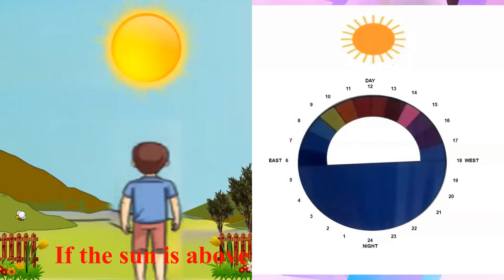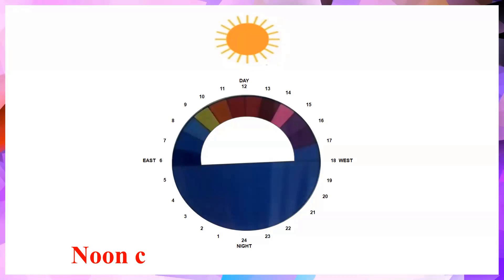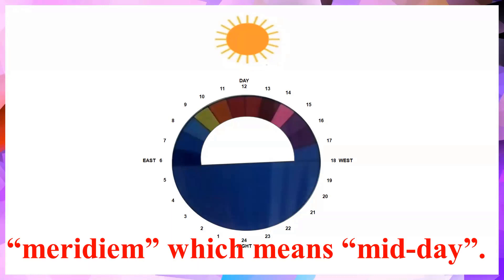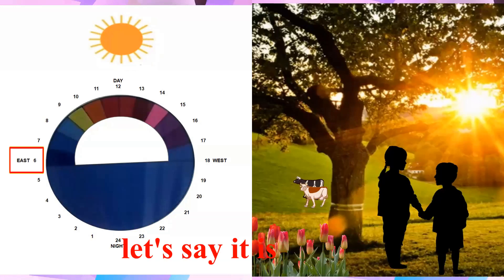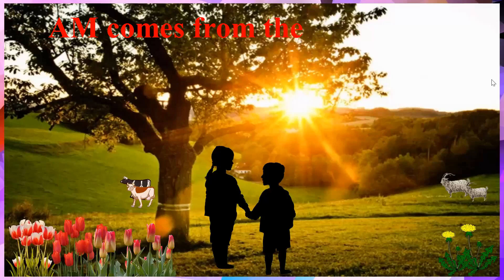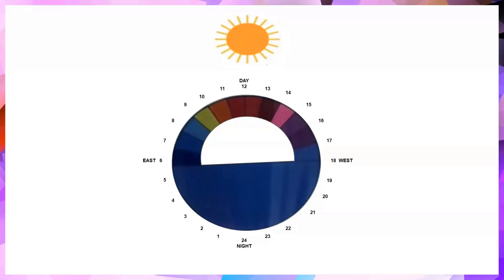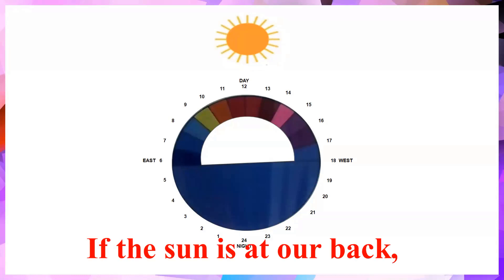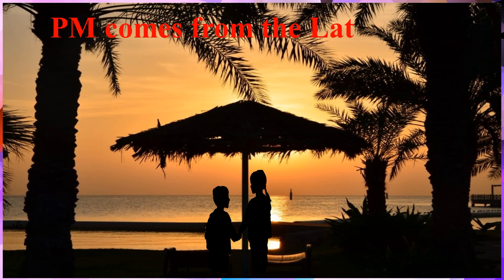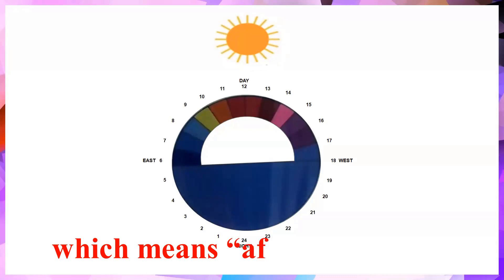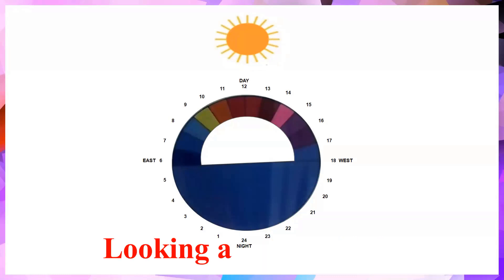If the sun is above us, it is noon. Noon came from the Latin word meridiem, which means midday. If the sun is at our back, let us say it is 6 p.m. P.m. comes from the Latin word post meridiem, which means after midday.